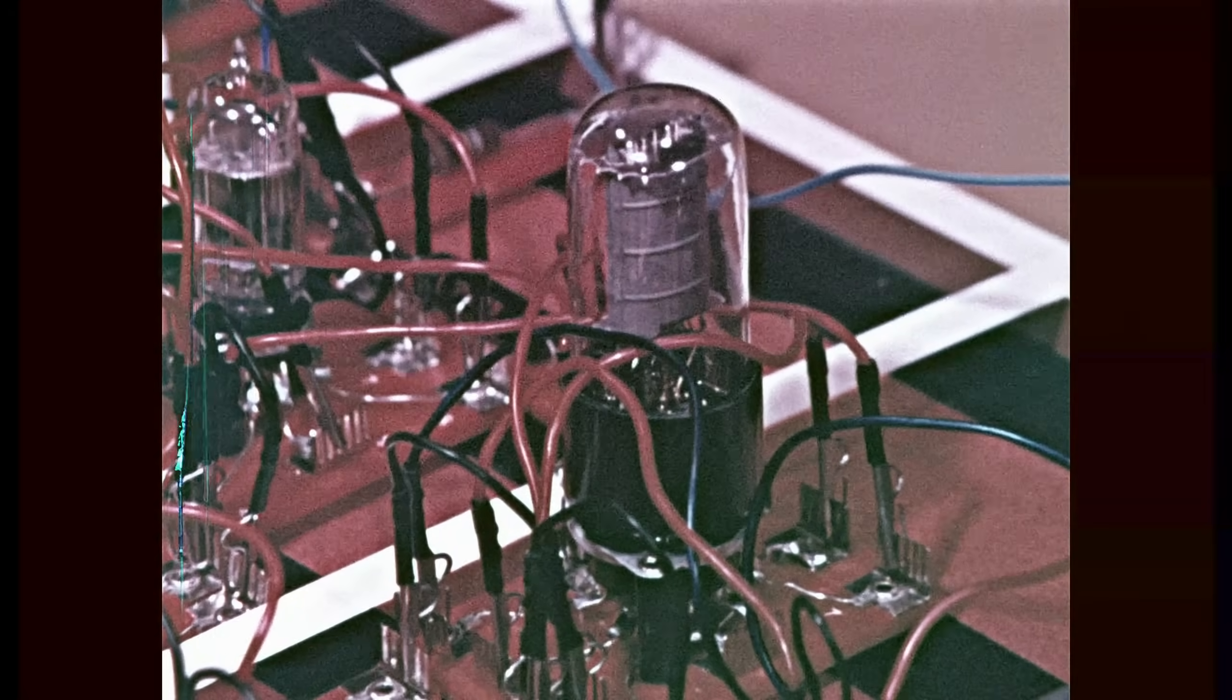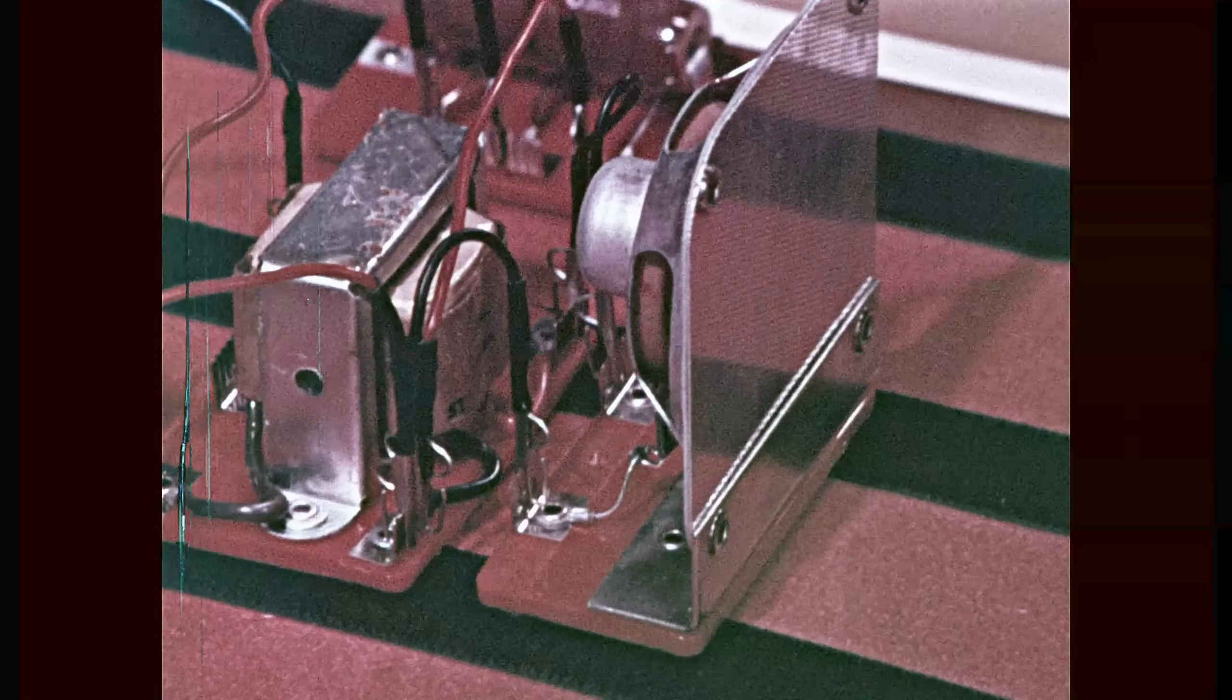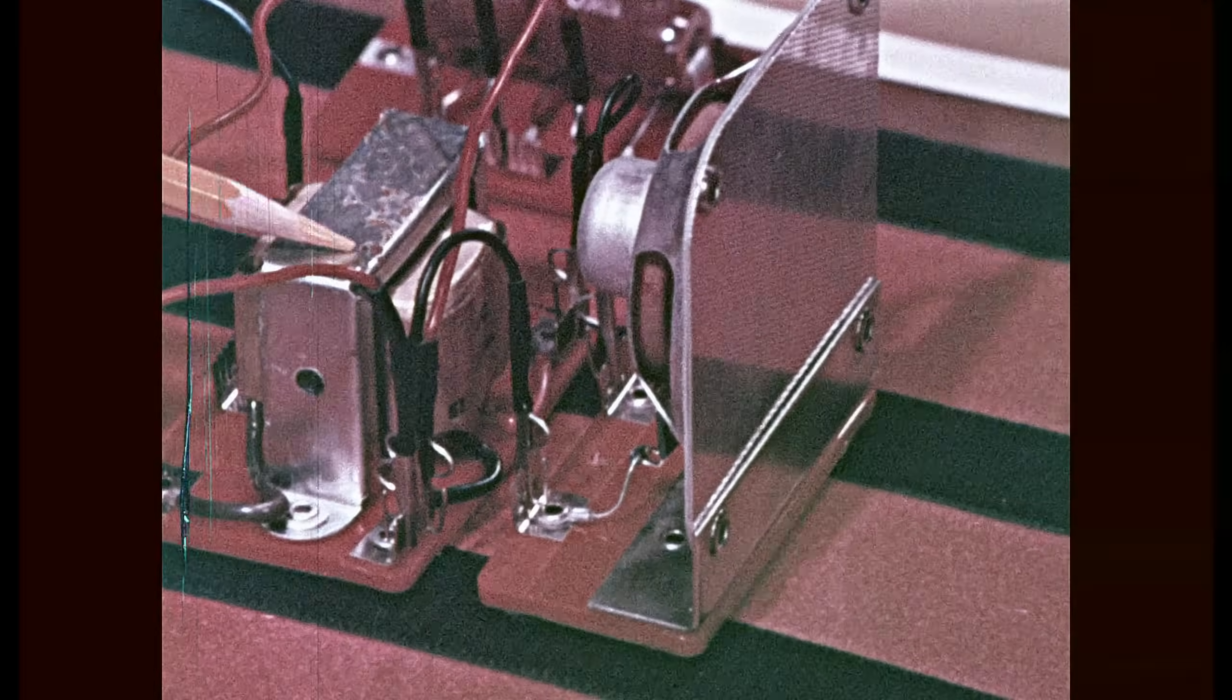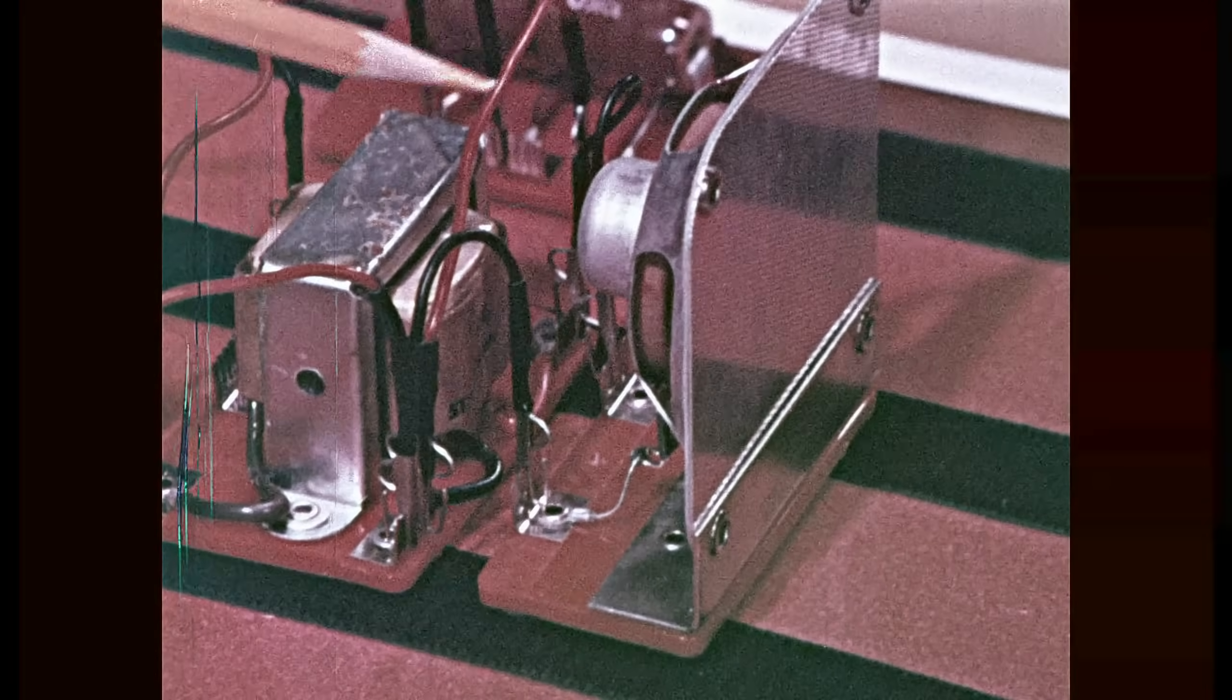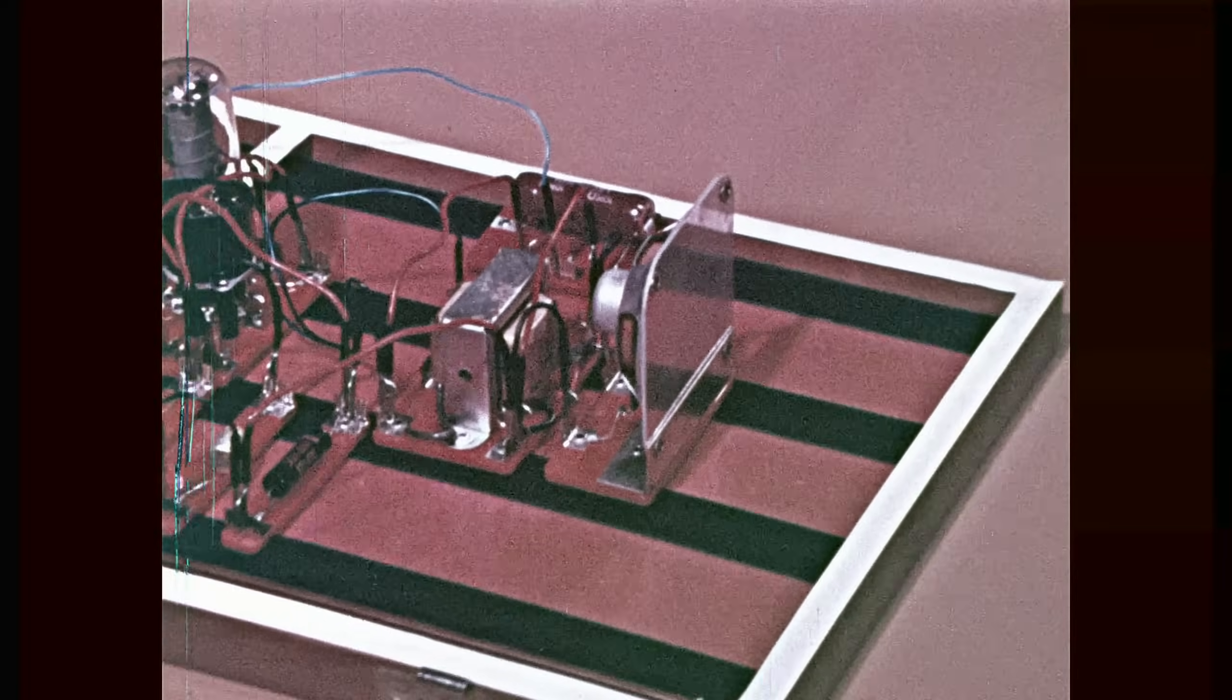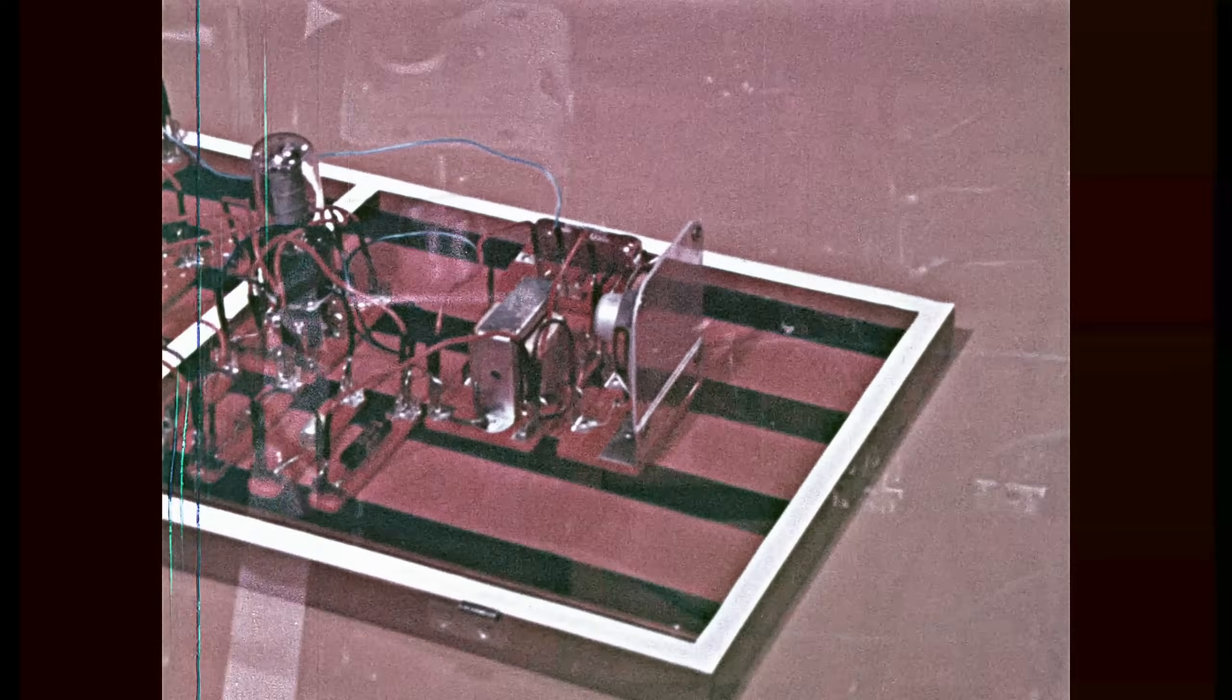From here, it's fed to the power amplifier, which adds sufficient power to drive the loudspeaker. The high voltage, low current audio signal is then transformed to a low voltage, high current signal in the AF output transformer, and passes on to drive the speaker, reproducing the sound recorded at the radio station.